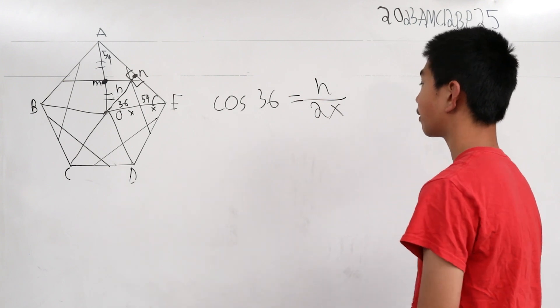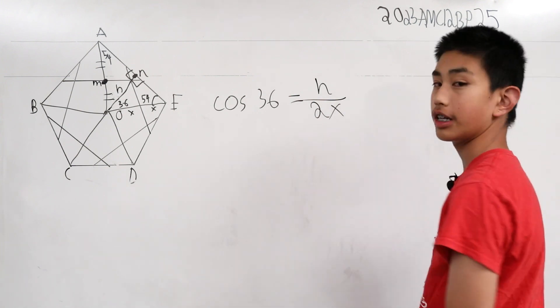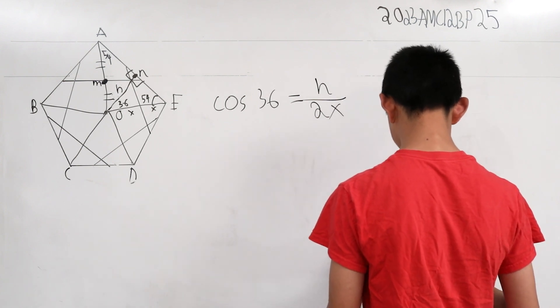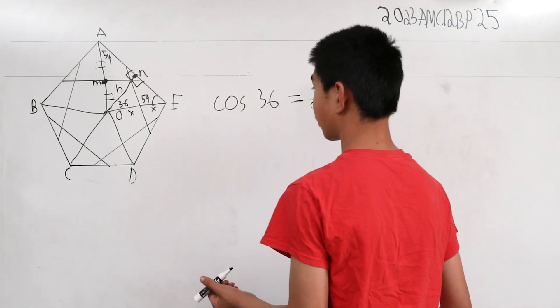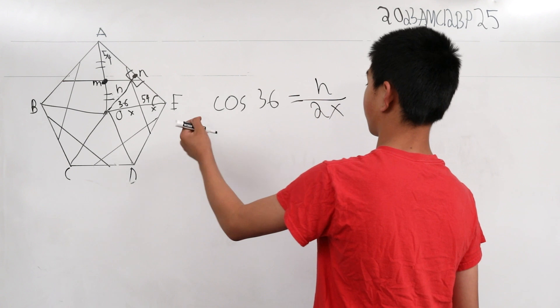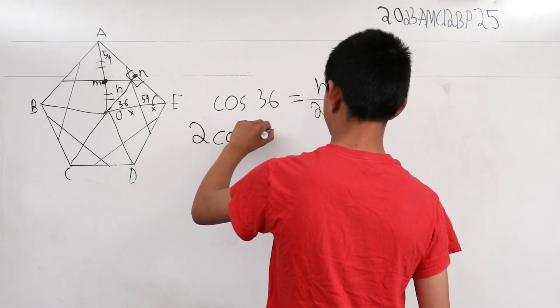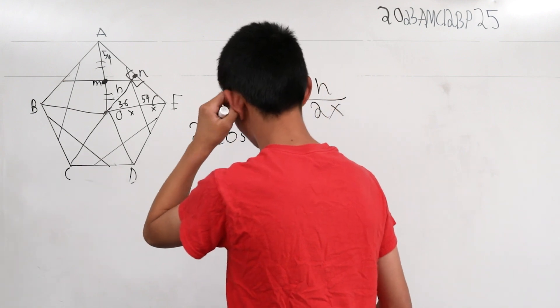If we have a ratio of cosine 36 is h over 2x, this is pretty useful because now we can find the ratio of the areas. So, 2 cosine of 36 makes a ratio of h to x.